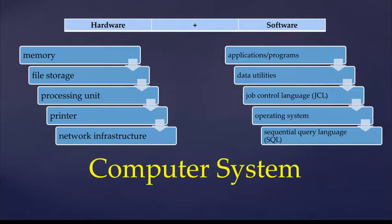A computer system is made of both hardware and software. The hardware provides the physical components: the memory, the file storage, the processing unit, printers, and network infrastructure. And software provides us with the applications or programs, data utilities, job control language, operating system, and sequential query language or SQL.